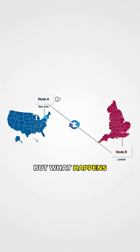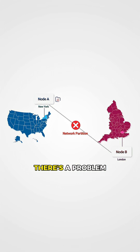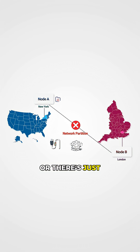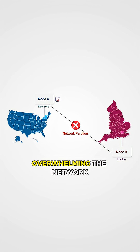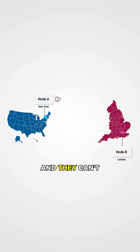But what happens when these nodes can't communicate with each other? This is called a network partition. Maybe there's a problem with the undersea internet cables, or a data center goes down, or there's just too much traffic overwhelming the network. Suddenly, node A and node B are isolated, and they can't sync updates with each other.